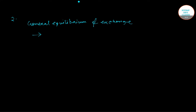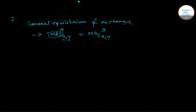General equilibrium of exchange is the condition when the marginal rate of substitution (MRS) in consumption for two commodities X and Y is the same for both individuals A and B. This is the first condition — general equilibrium of exchange.